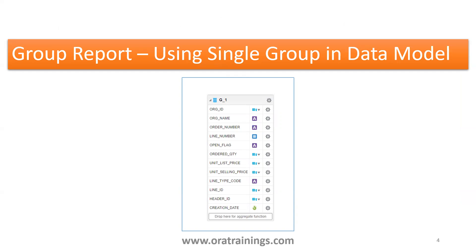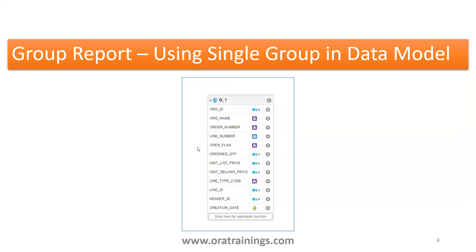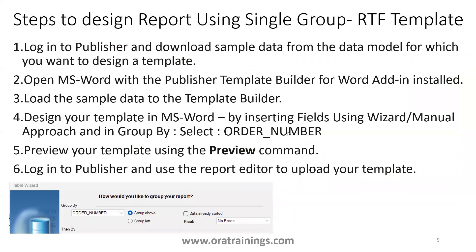There are multiple ways to achieve grouping logic. In the single group approach we mention only one group with the same query shown earlier. The important step is step four: while creating a table using the wizard, you specify which attribute to group by. Based on that, it automatically generates the grouping logic, and then you can preview and upload the template to the instance.